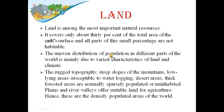The uneven distribution of population in different parts of the world is mainly due to varied characteristics of land and climate. The rugged topography, steep slopes of mountains, low-lying areas susceptible to waterlogging, desert areas, and thick forested areas are normally sparsely populated or uninhabited. Plains and river valleys offer suitable land for agriculture. Hence, these are the densely populated areas of the world.